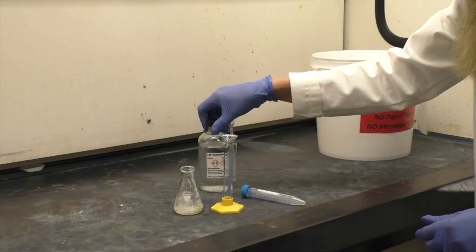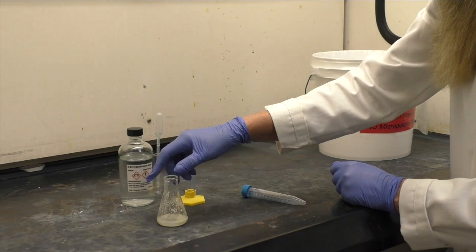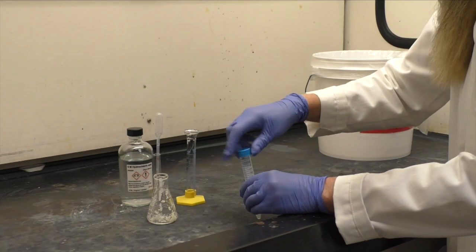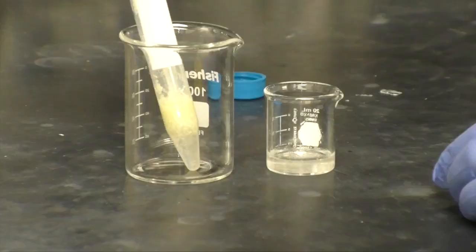Add 5 milliliters of 6 molar hydrochloric acid to the flask and swirl to dissolve any residue. Transfer the solution to a 15 milliliter centrifuge tube. Shake well and allow the layers to separate. Transfer the aqueous or bottom layer into a small waste beaker and set it aside.